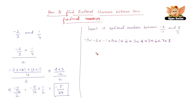So let us count the numbers between minus 3 and 8. We've got 1, 2, 3, 4, 5, 6, 7, 8, 9, 10. So we need 10 rational numbers between minus 3 and 8.